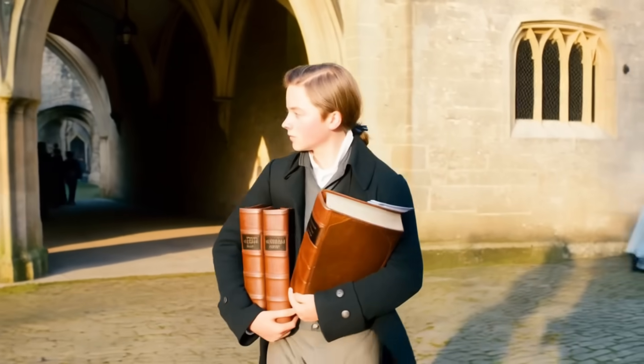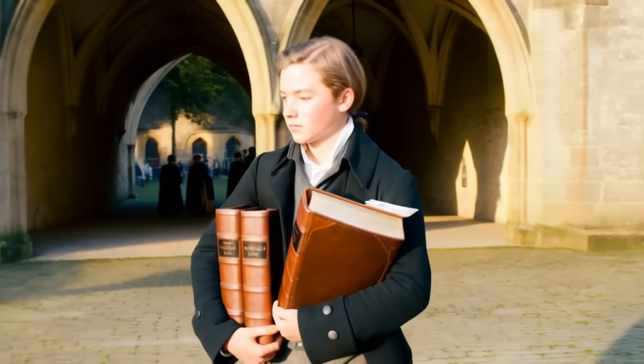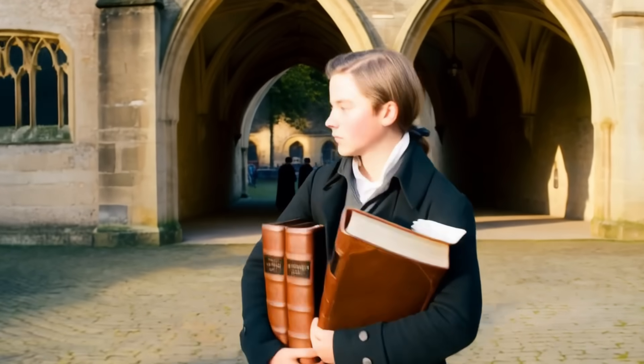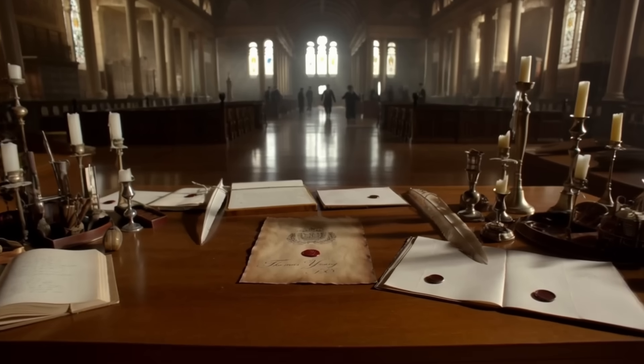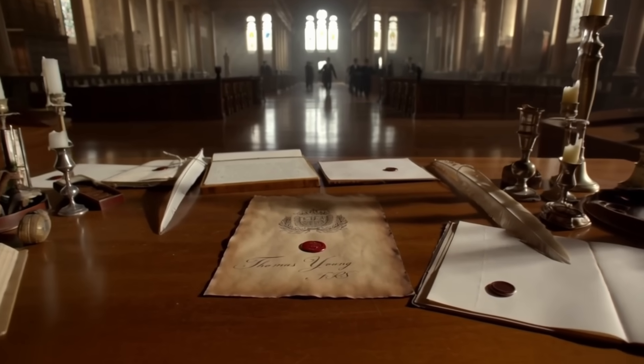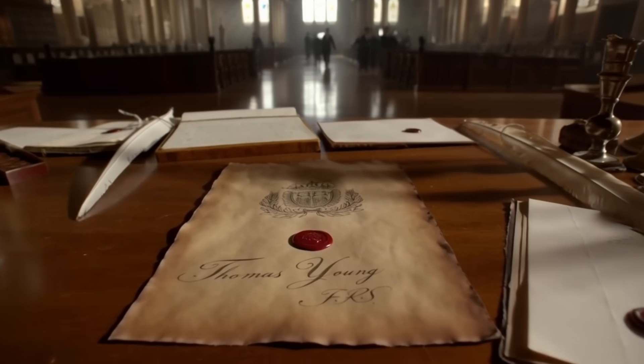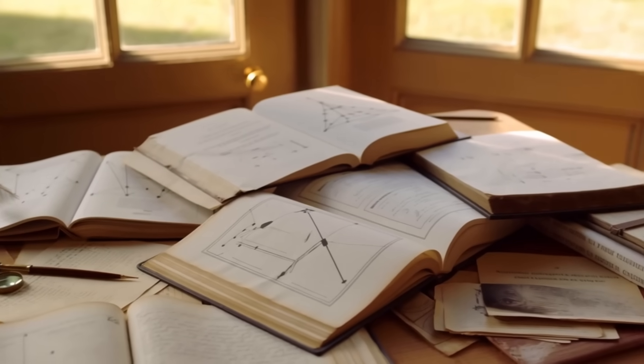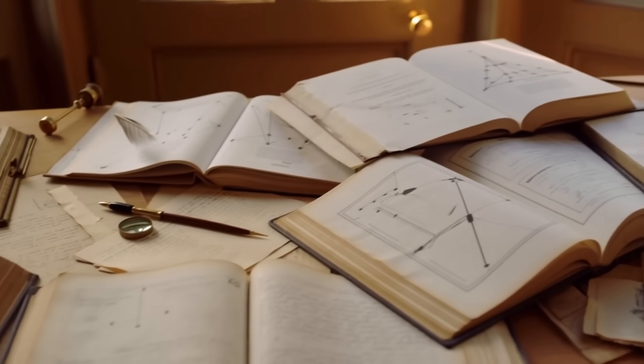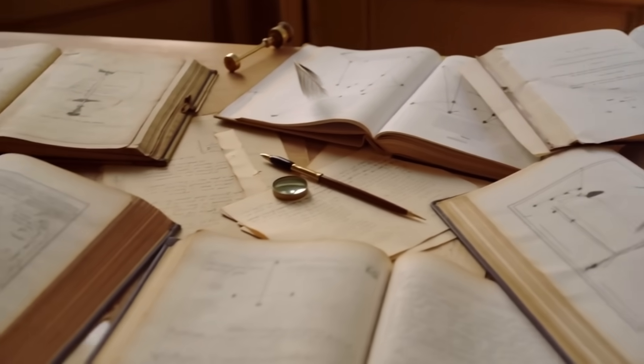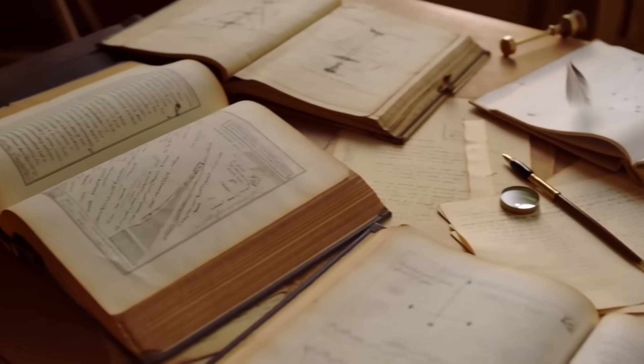At Emanuel College, Cambridge, he studied everything. Medicine, optics, mechanics, ancient languages. By 21, he was elected a fellow of the Royal Society, the youngest in living memory. His professors found him brilliant but unsettling. They said he never specialized, never chose a field. But that was the point. Thomas Young didn't want to narrow his curiosity. He wanted to map the entire landscape of knowledge.